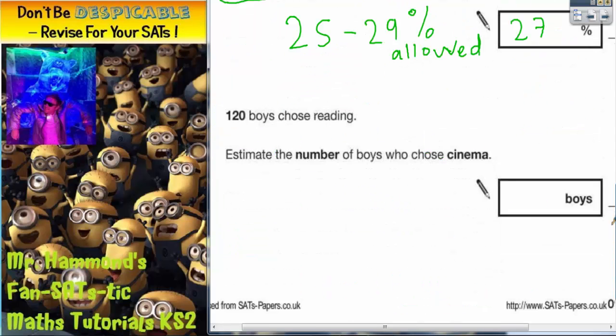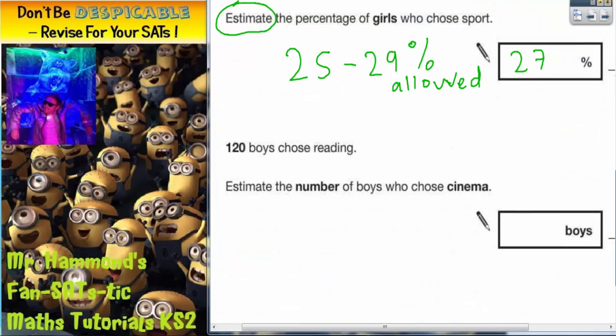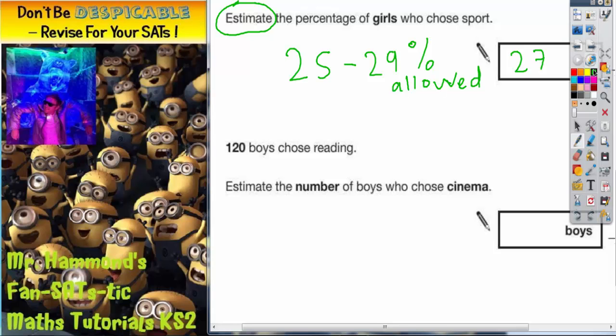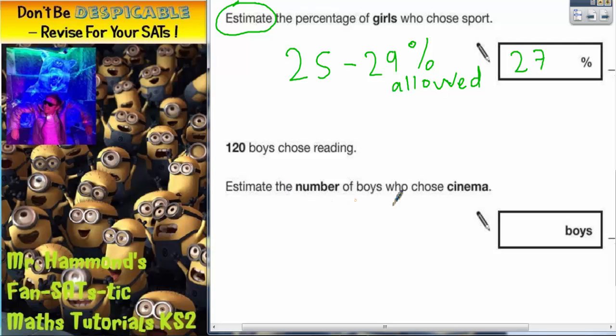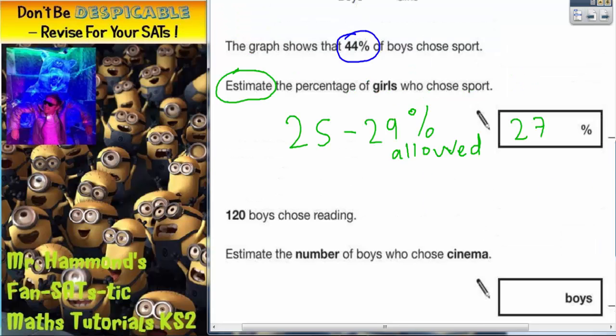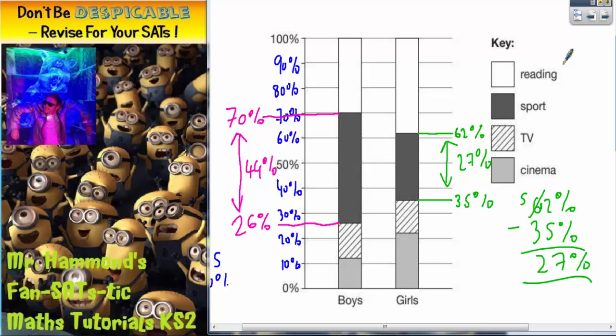Now, let's scroll down to see the second part of the question. It says, 120 boys chose reading. Estimate the number of boys who chose cinema. So, we know that reading is 120 boys.